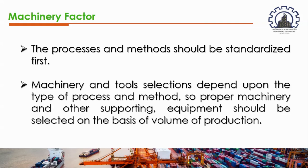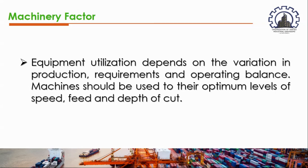The process and methods should be standardized first. This means you have to get the standard function of the machine as well as the method, so you'll have the appropriate layout for the machine in question — like how the machine will be used, what the method or function of the machine is, how many persons are needed to operate it, and how many are needed for maintenance. Machinery and tool selection depends upon the type of process and method, so proper machinery and supporting equipment should be selected based on the volume of production.